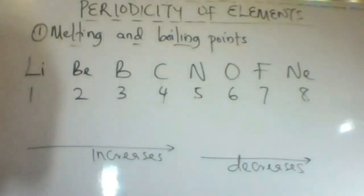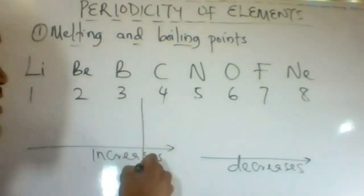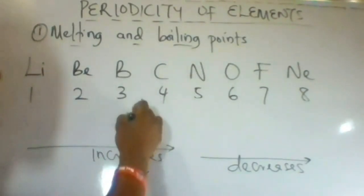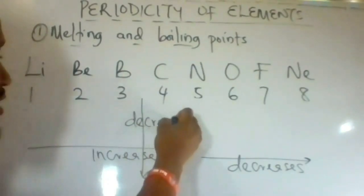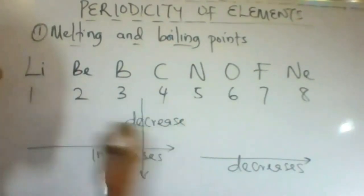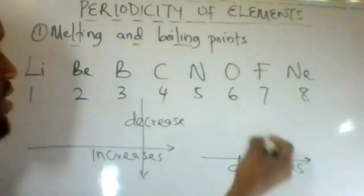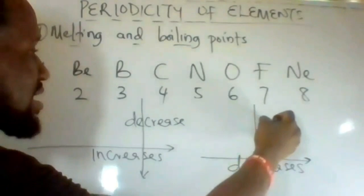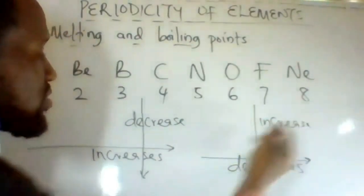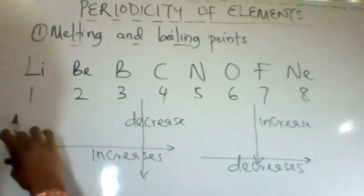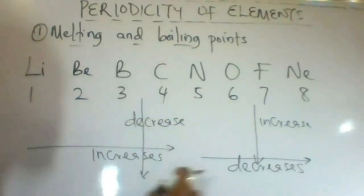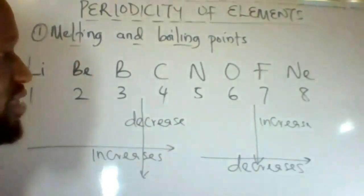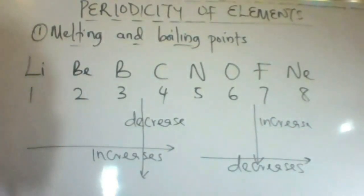Down the group for metals, the melting points and boiling points will decrease. It increased from left to right across the period, so it will decrease down the group. For non-metals, melting points and boiling points will increase down the group — if it decreases for non-metals across the period, it will definitely increase down the group.